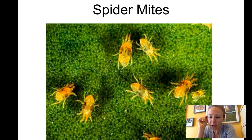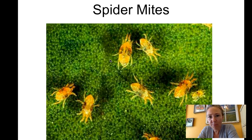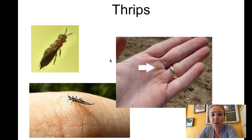Spider mite damage almost looks from far away like the leaf is just yellow, but if you look very closely you can see teeny tiny little dots where these arachnids have pierced into the leaf. It almost looks like one of those pointillism paintings — little tiny yellow dots very close together. Spider mites are a very common plant pest, seen in both controlled environments and field-grown crops.